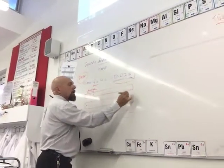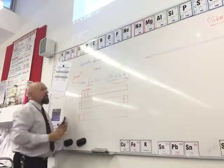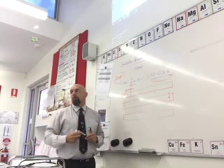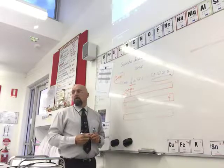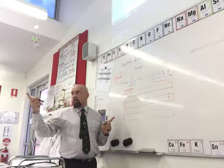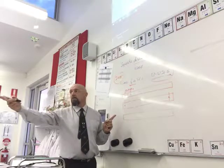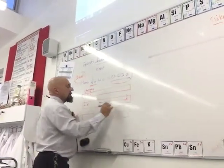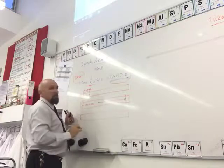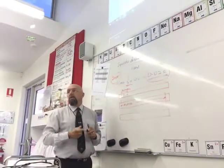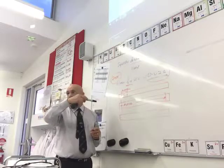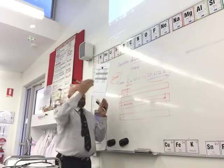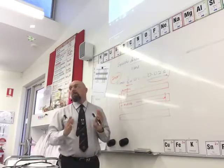Looking at the next example, just these two dots here — what's the time between them? The time between any two dots is 0.02 seconds. So the time from there to there is also 0.02 of a second. Nothing's changed in terms of the speed of the timer going up and down. So between any two dots, the time interval is always the same.